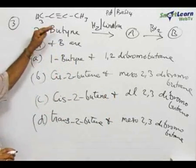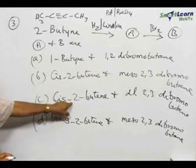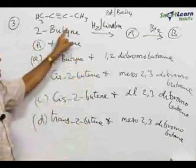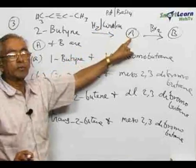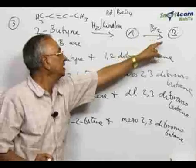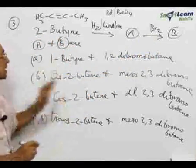This always leads to a cis-butyne. This compound A, the question asked this: on reduction with the Lindler catalyst leads to a compound A which on further bromination leads to B. What are A and B? That is the question that is being asked. Four choices are given.